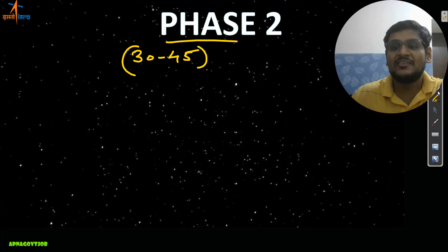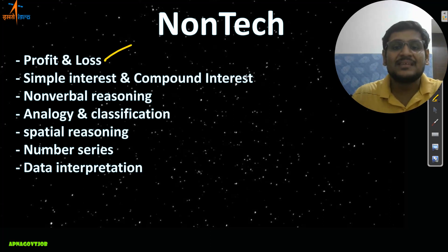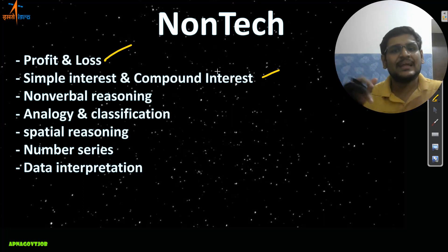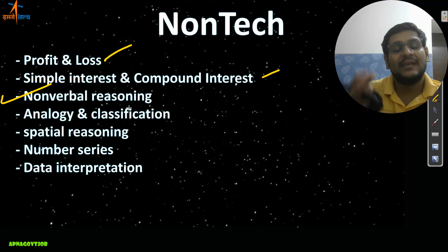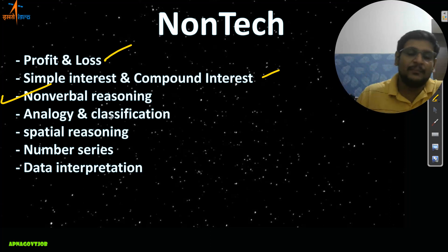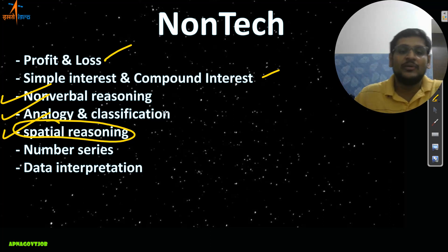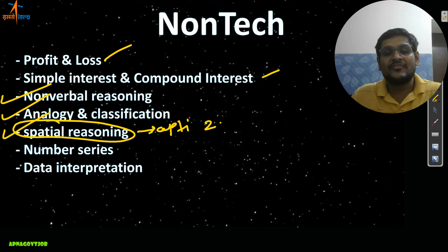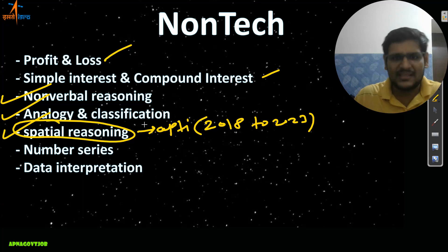Now branch-wise discussion will start, but before that, the non-technical part which is common for all branches. You need to cover profit and loss, simple interest, and compound interest for aptitude — that's enough, no need to do too many things. For reasoning, along with what we already covered, do all non-verbal reasoning topics: embedded figures, figure counting, paper cutting, paper folding, water image, analogy, and classification. For special reasoning, refer to GATE previous year questions from 2018 to 2023.